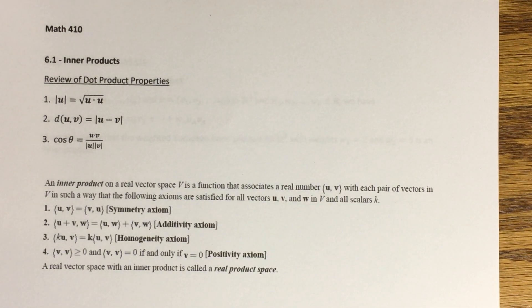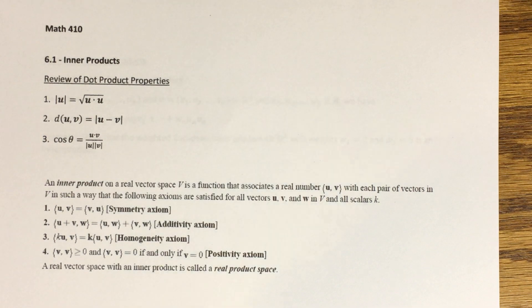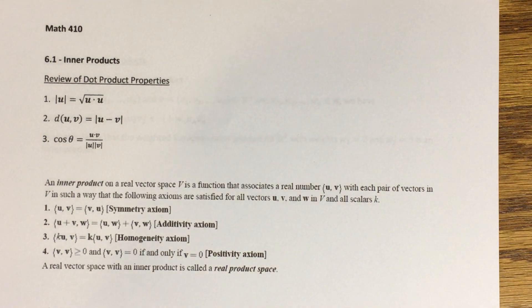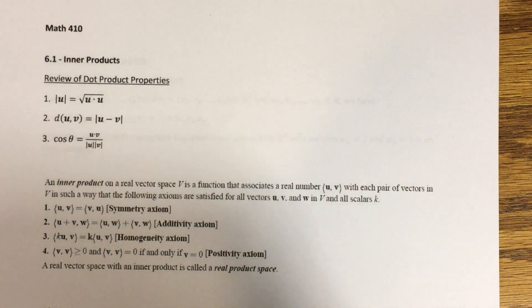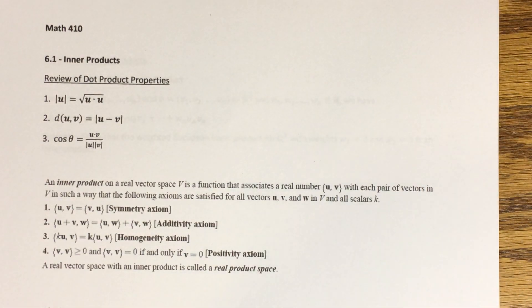We're in Chapter 6 now, and Chapter 6 is all about these things called inner product spaces. An inner product is a really useful tool that you can use in a vector space if one exists, and essentially what it does is it generalizes the dot product in Rn.